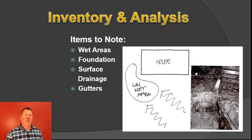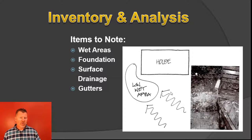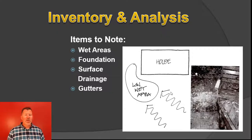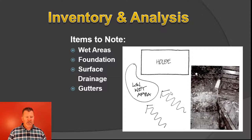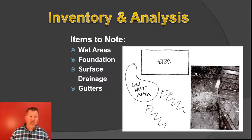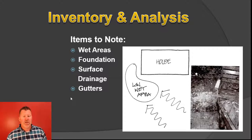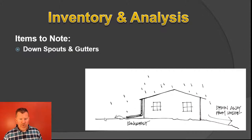Note wet areas. Note gutters and downspouts — if a downspout is broken, it's creating a wet spot. The wet spot is part of the inventory; analysis is how to get rid of it — extend the drainage pipe or replace a section of buried downspout. Always note on your site plan where the gutters come down, because that may be where the client wants to plant something that doesn't need wet feet. You'd either have to pipe them off or move the plants elsewhere.